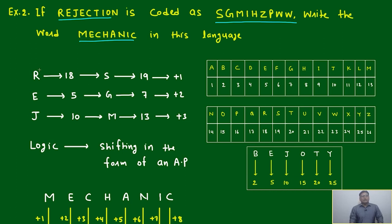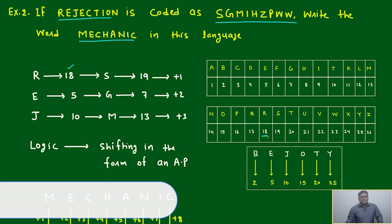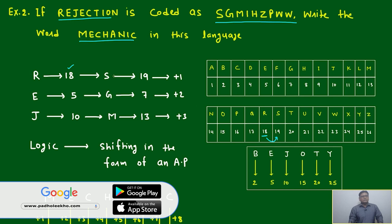We'll try to understand what is the numerical position of each and every alphabet. First we'll start from REJECTION: R is the 18th position. It is changing to S, which means just the immediate next, 19, so plus 1.